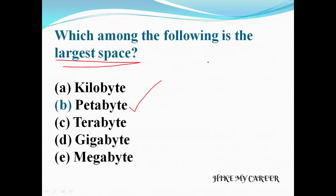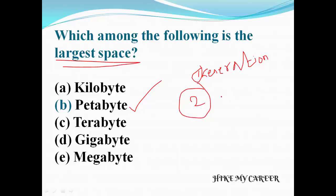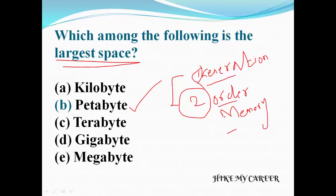There are two very important topics in the computer knowledge section: one is generation of computers, and the other is ordering of memory. They must ask one or two questions from these sections, so please note the generation of computers and ordering of memory questions carefully.